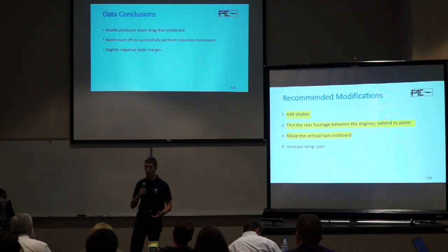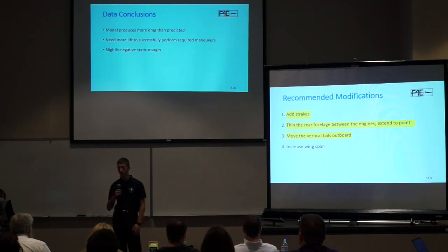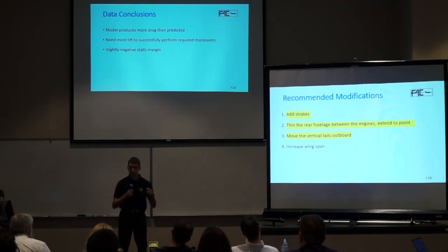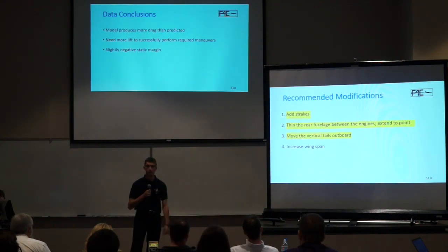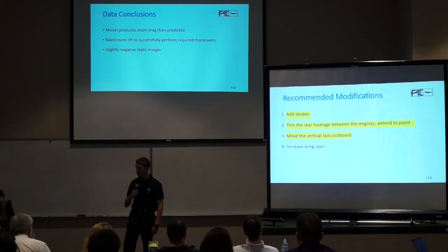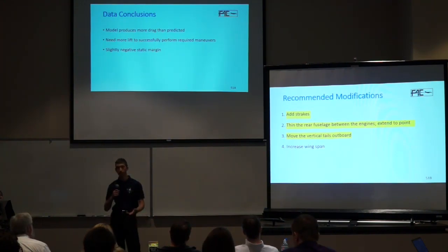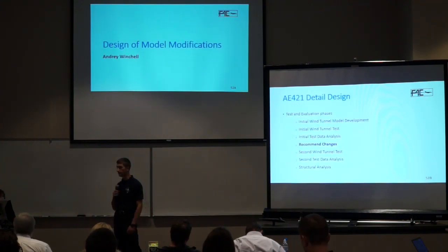From this data we concluded that the model produces significantly more drag than initially predicted, significantly affecting performance. We also found we produced more lift than predicted, but still need more. We found a slightly negative static margin, which wasn't predicted. Our recommended modifications in order of precedence are: first, add strakes to increase lift; second, thin and taper the rear fuselage between the engines to reduce pressure drag; third, move the vertical tails outboard so the vertical spar sits within the fuselage rather than above the engine cans; and fourth, increase wingspan to increase lift. Andre will now discuss the modifications that were actually implemented.